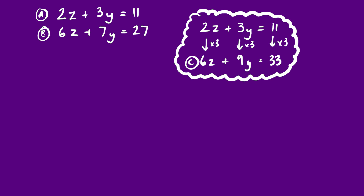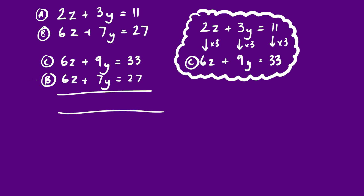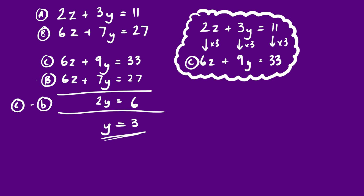We have a new equation — let's call it C: 6z + 9y = 33. Now C and B both have 6z, so we can subtract one from the other to get 0z. Doing C take away B: 33 − 27 = 6; 9y − 7y = 2y; 6z − 6z = 0. So 2y = 6, therefore y = 3.